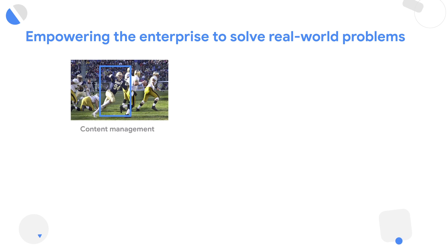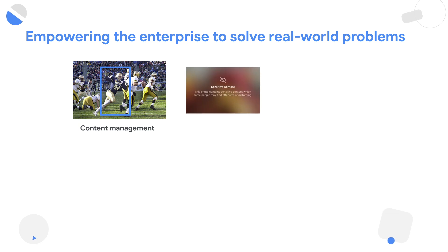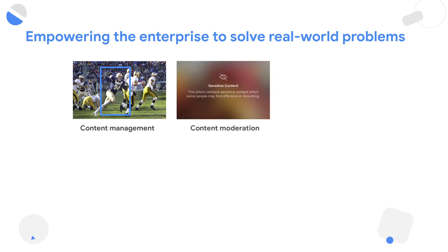Let's start with the media and entertainment industry, especially with the growth happening in OTT and user-generated content. ML can be used to optimize content management through automated smart tagging, content moderation, and smart retrieval of content.